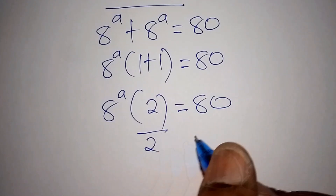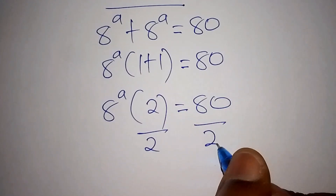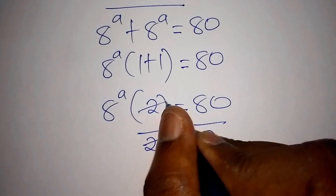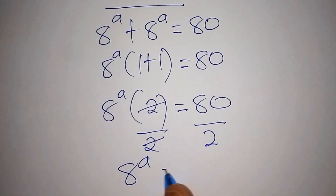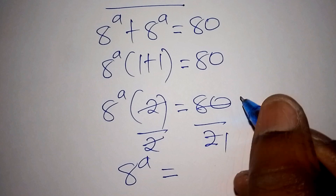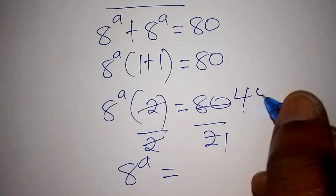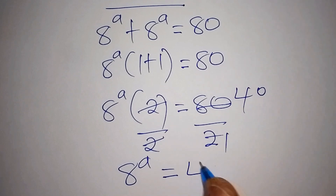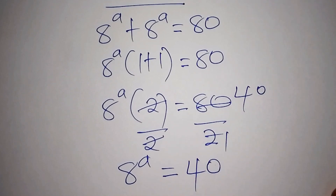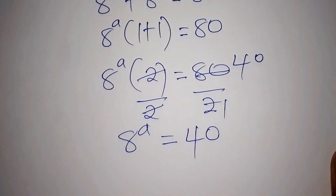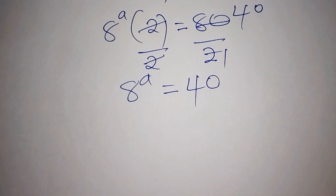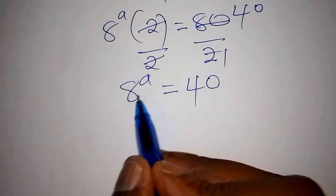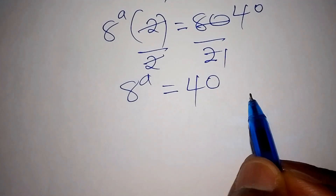From there we shall divide both sides by 2, so that the 2s cancel. We now have 8 to the power of A equals 40. So how do we still find the value for A, because A is not yet solved?